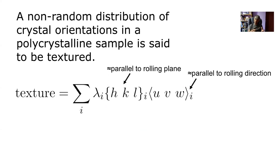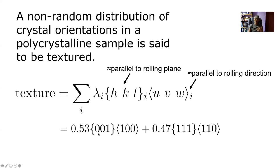Texture can be expressed in a simplified way by specifying which {HKL} planes align parallel to the rolling plane and which <UVW> directions align with the rolling direction, along with the fraction of grains having that alignment. For example, {001} planes aligned to the rolling plane and <100> directions aligned to the rolling direction with a fraction of 0.53 of total crystals, with an alternative texture component for the remaining crystals.